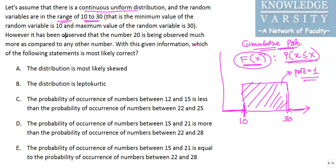The distribution has a range from 10 to 30, and it has been observed that the number 20 is occurring much more compared to any other number. When doing this random sequencing, you find that 20 occurs much more than others. You need to determine the impact of this, and they are asking you to find which of the following statements is most likely correct.